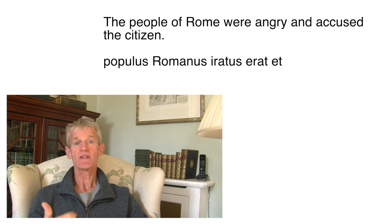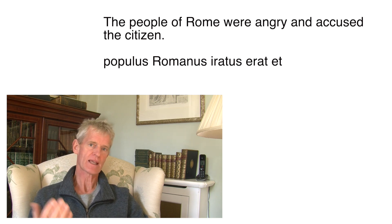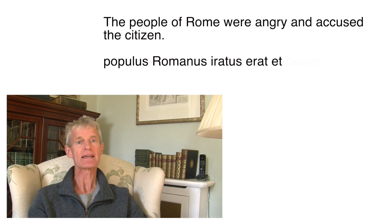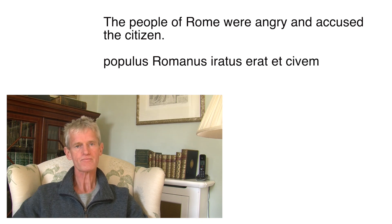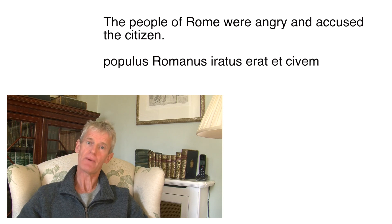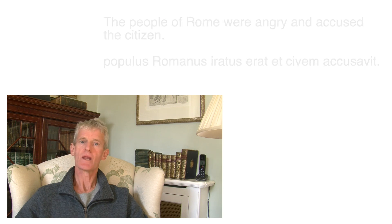Then joined by 'and': et. 'And accused the citizen' — the subject of 'accused' is still the Roman people, so it's still singular and the verb goes at the end of this clause. The object is the citizen: civis, accusative singular, so civem. Et civem accusavit.